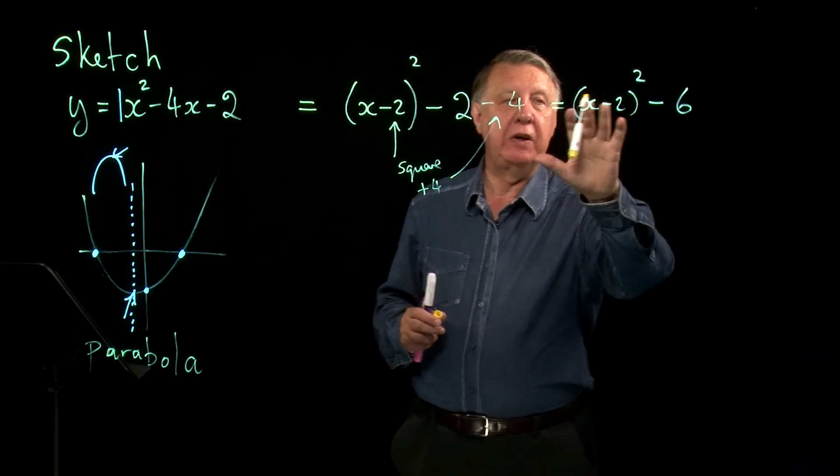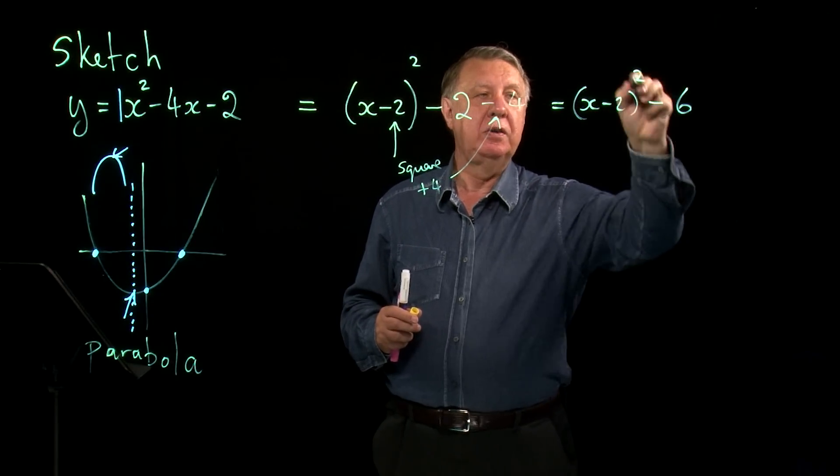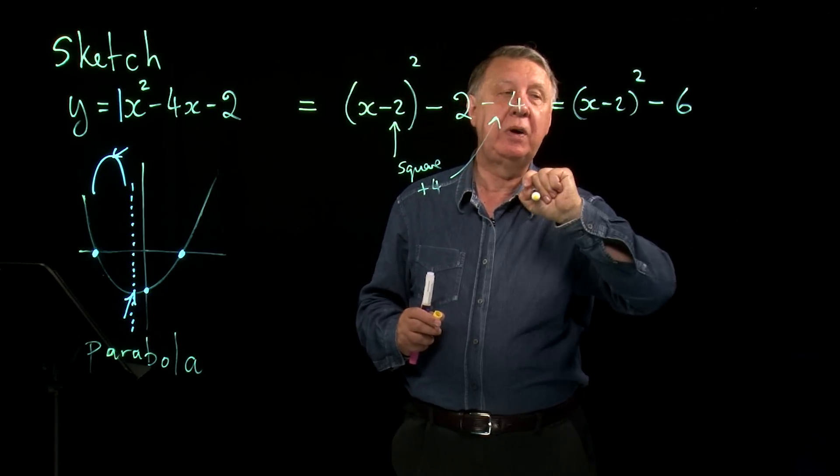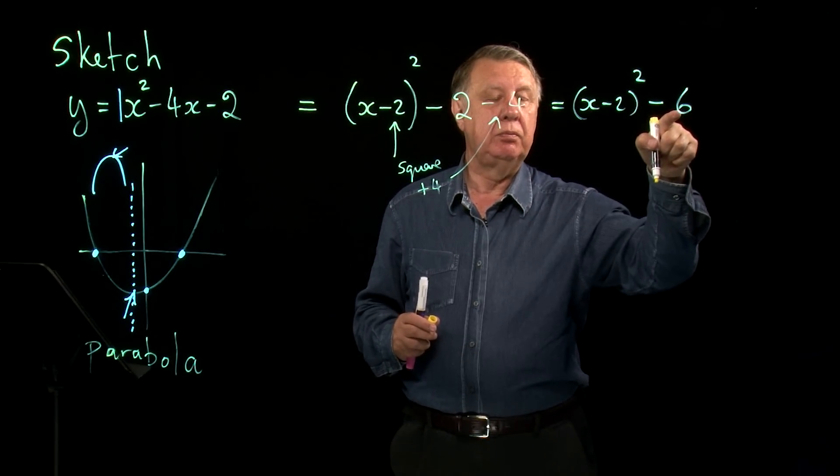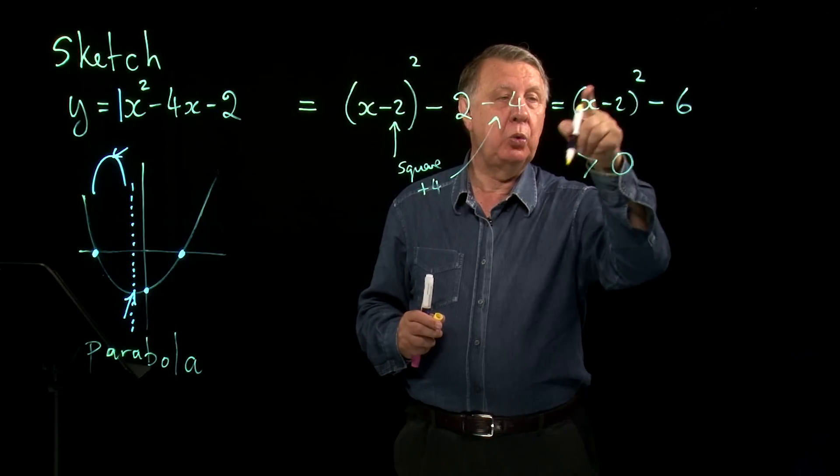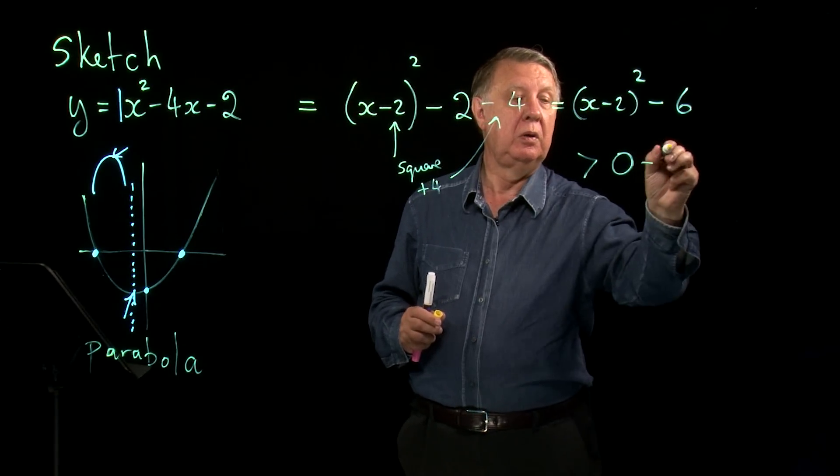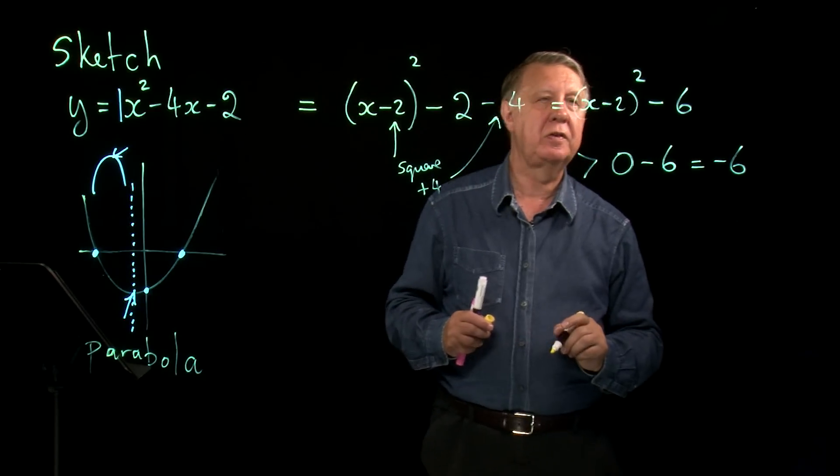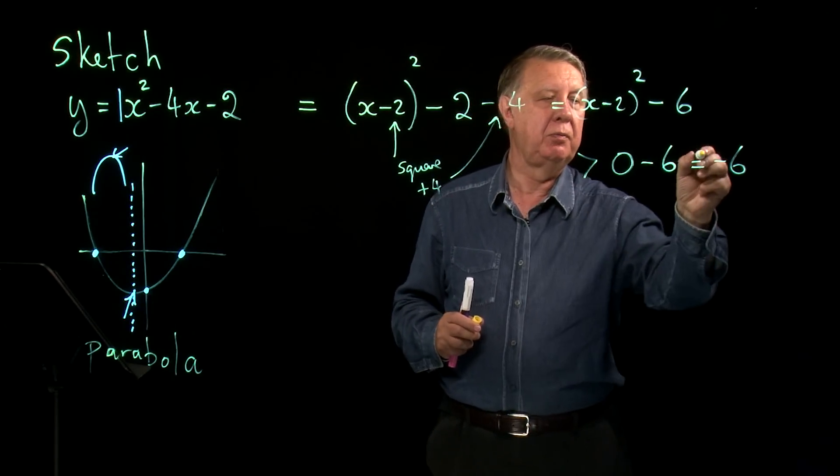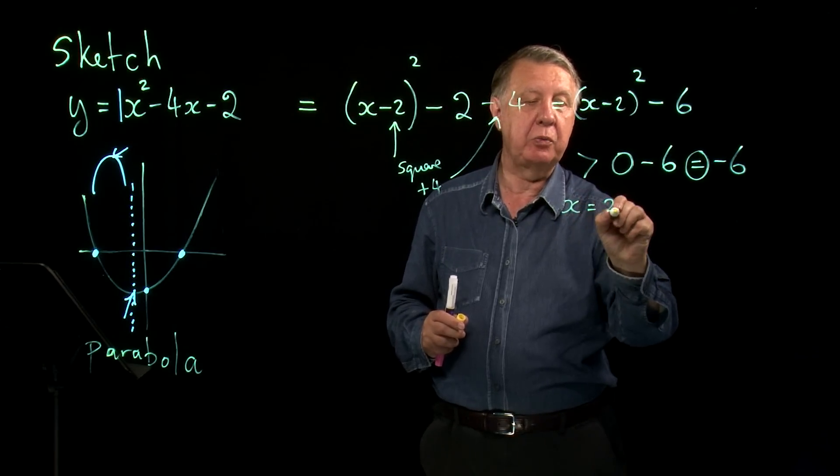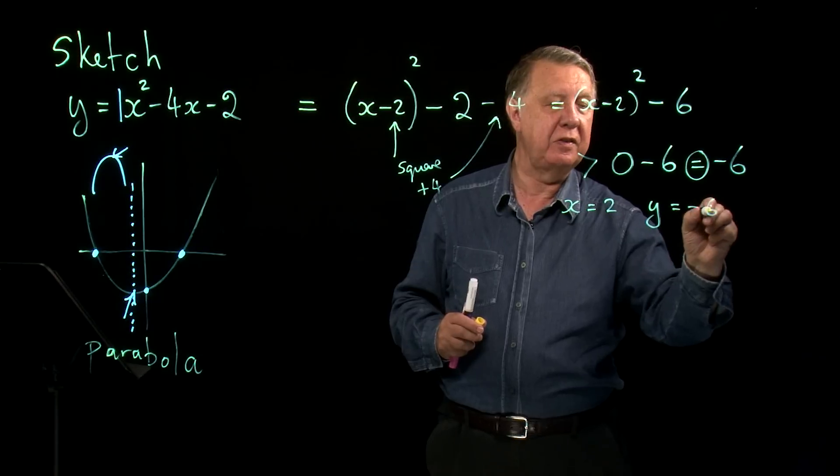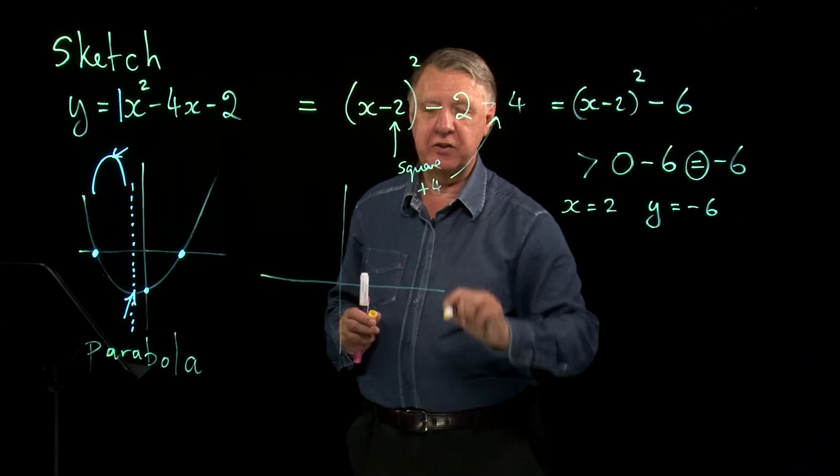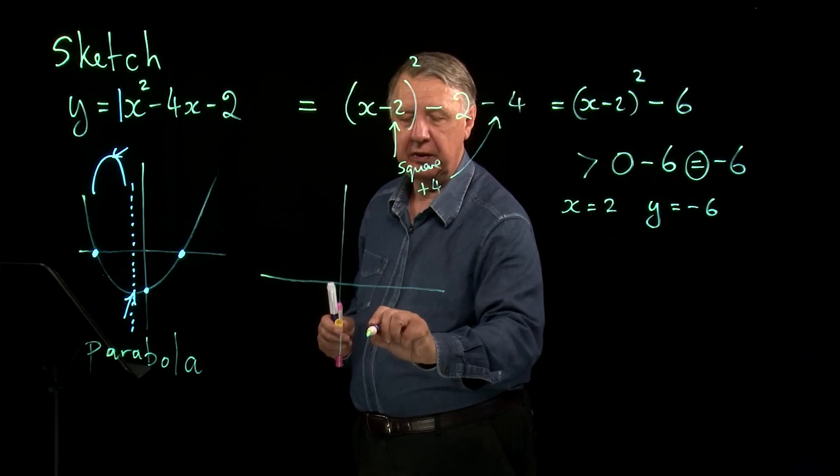Now there's a lot of information in here already. Anything squared is positive. So however hard I try here I'll end up with a positive number. Take away 6. So the smallest I can make that is 0. And so this will always be greater than negative 6. And it will equal negative 6 when x is 2. So the point when x is 2 y is negative 6 is the lowest point on the graph. So if I'm starting to sketch my graph 2 negative 6 somewhere down here is the lowest point.